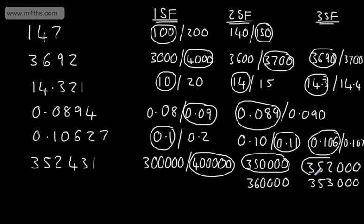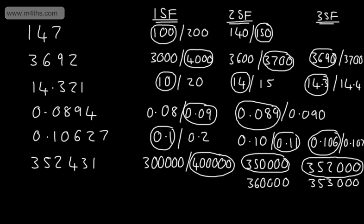So as you can see, just read it out to yourself. The first significant figure is when we read a number from left to right — it's the one with the value. We round to that significant figure. If we're doing the first, we go to the second and third if possible. So there's a bit on rounding to decimal places and significant figures.